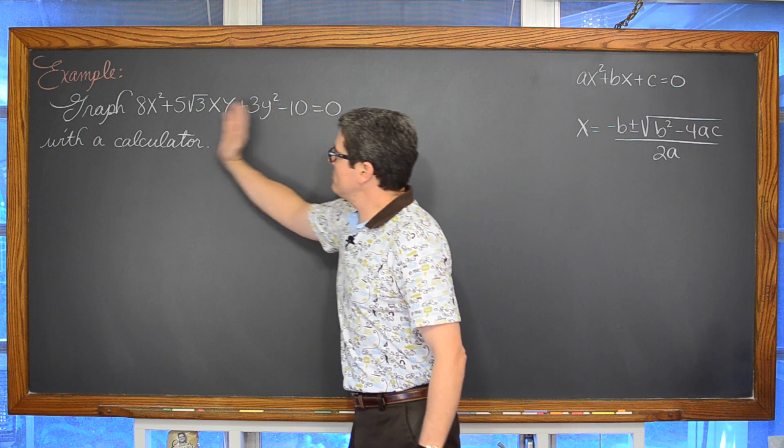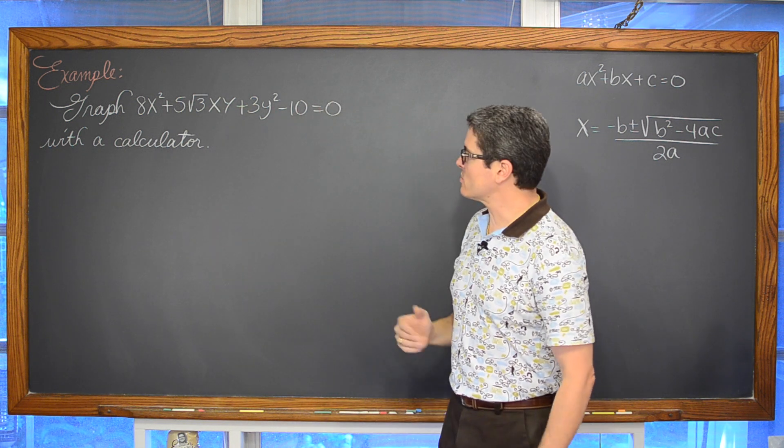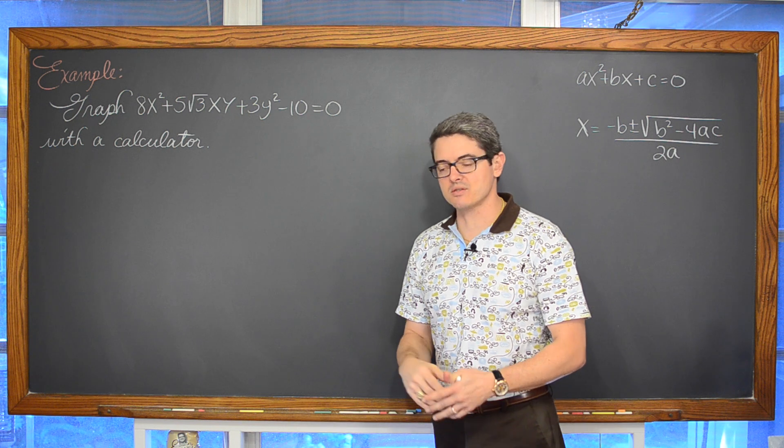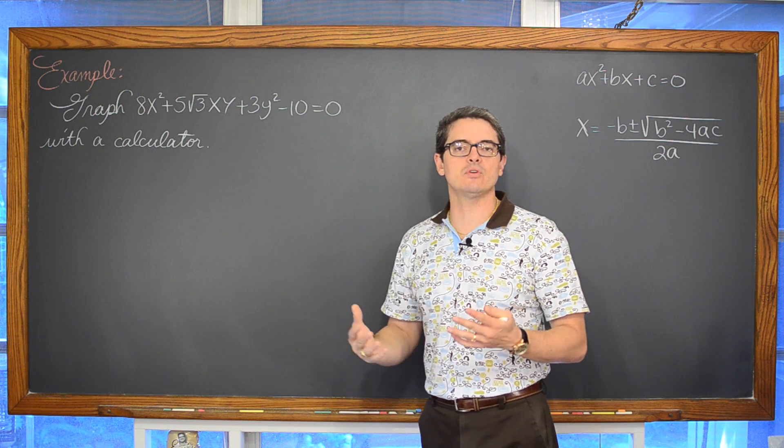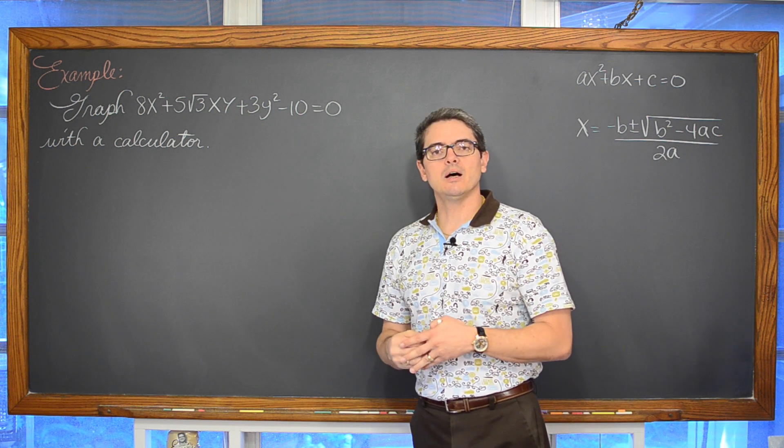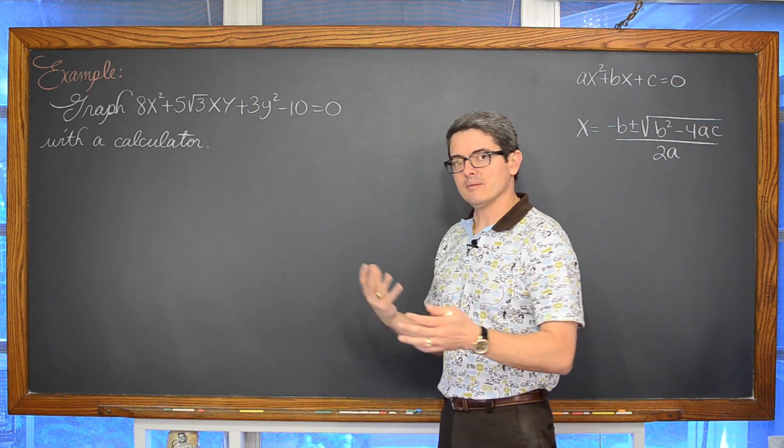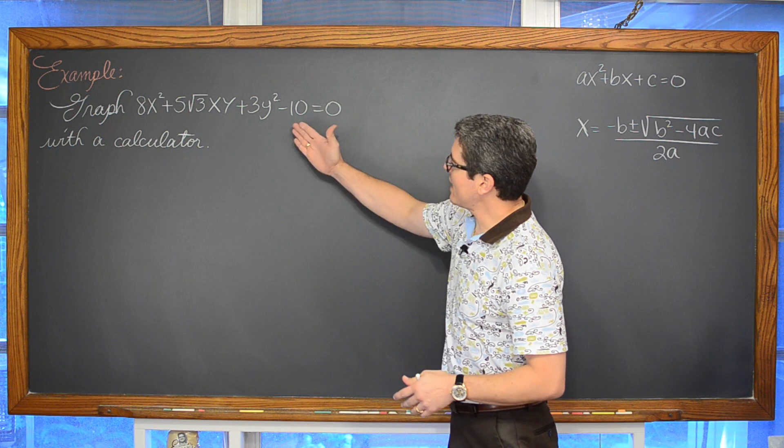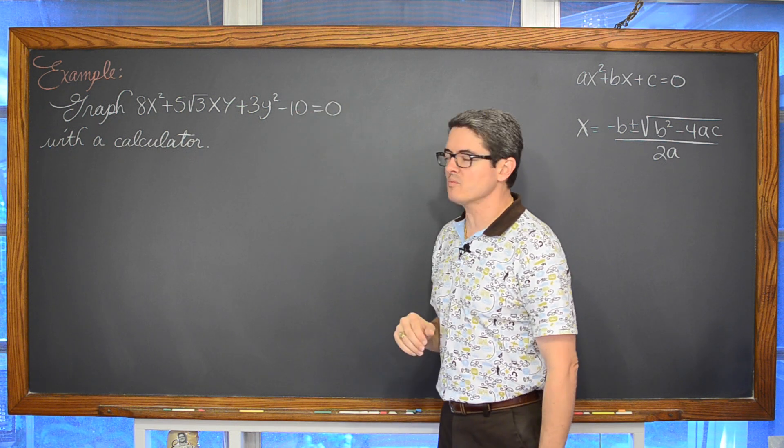So if we are going to get this into our graphing calculators we need to get it so that it is y in terms of x. In our graphing calculator, at least all of the ones that I have used, doesn't deal with rotated axis. So we need to write this so that it is y in terms of x.